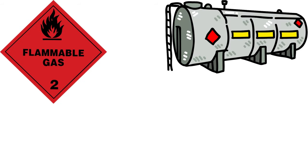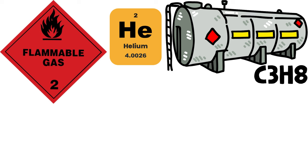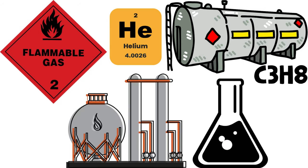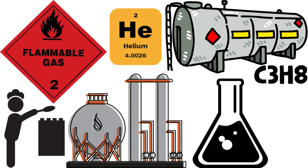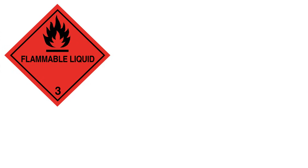Now let's talk about Class 2: Gases. These are substances stored as compressed gases or as liquefied gases under pressure. Examples include propane for grilling or helium for balloons. Propane tanks are a common Class 2 example — mishandling them can lead to leaks and potential explosions. This class is vital for industries such as gas supply, chemical manufacturing, and the food industry, where gases like carbon dioxide are used to carbonate beverages.